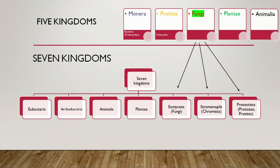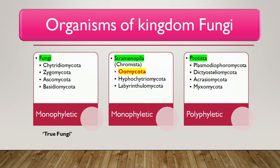Now moving to fungi — in the seven kingdom classification, the true fungi belong to kingdom Eumycota, which includes groups like Chytridiomycota, Zygomycota, Ascomycota, and Basidiomycota. These are the groups that show true fungal characteristics, and all are monophyletic. Molecular and genetic studies find that Chytridiomycota, Zygomycota, Ascomycota, and Basidiomycota all originated from one common source.